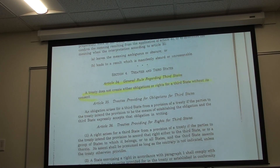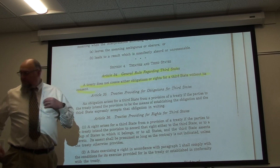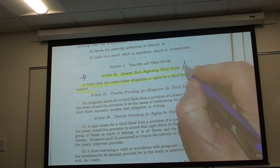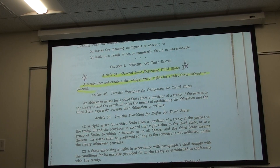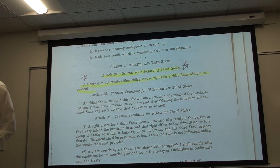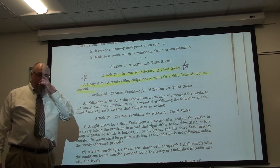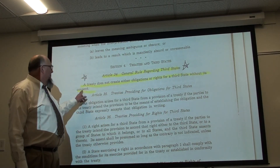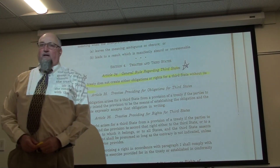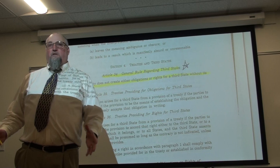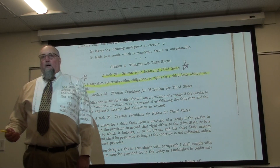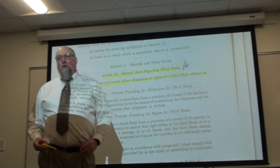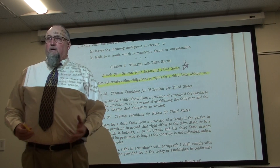Article 34 addresses treaties and third-party states. Very simply: a treaty does not create either obligations or rights for a third state without its consent. That means a country not part of a treaty is not bound by it — just as in contract law, if you're not a party to a contract, you are not bound by it.